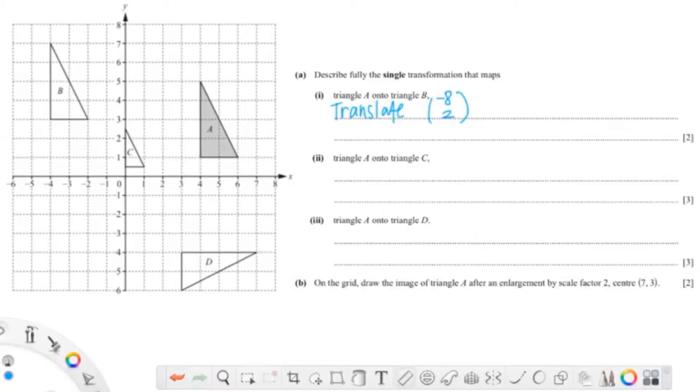So the next question is asking about A onto C. We know that A onto C, the size of the shape changes, so it's an enlargement. I'm using this ruler to find the point where the shape enlarges.